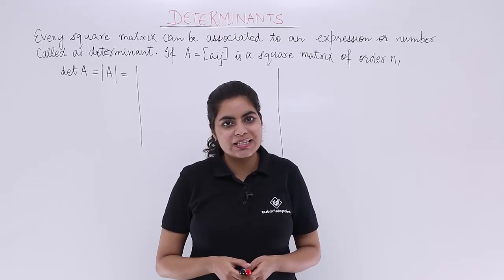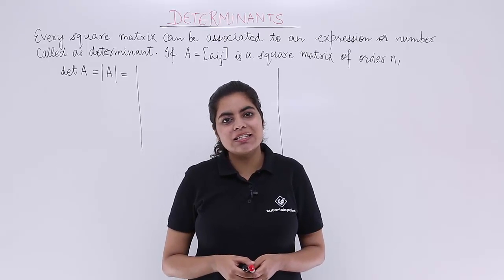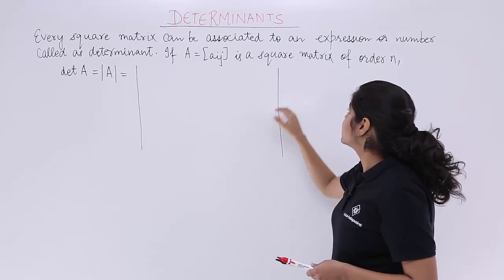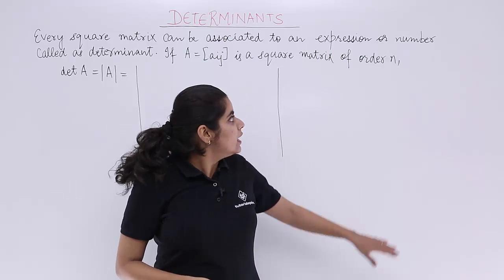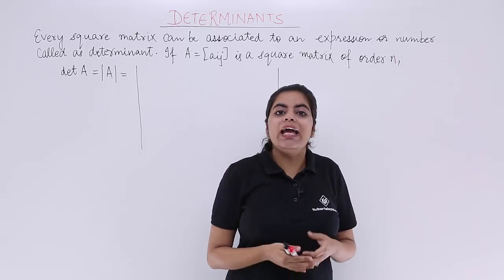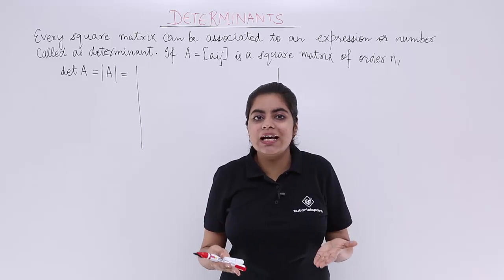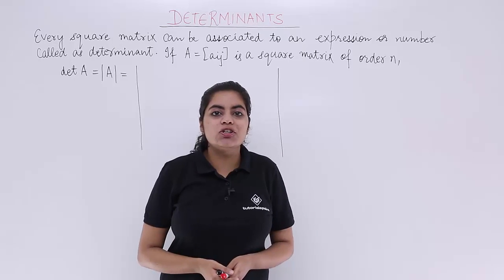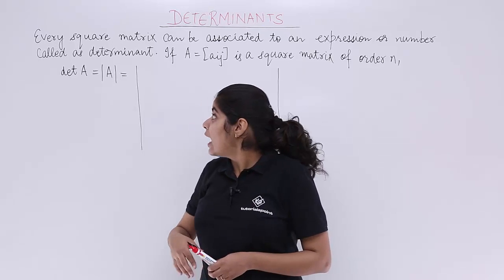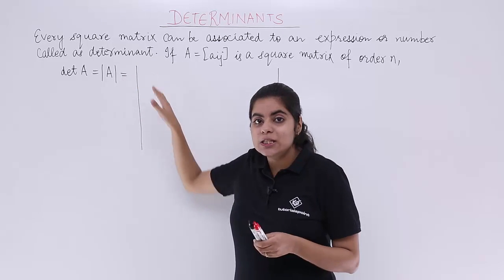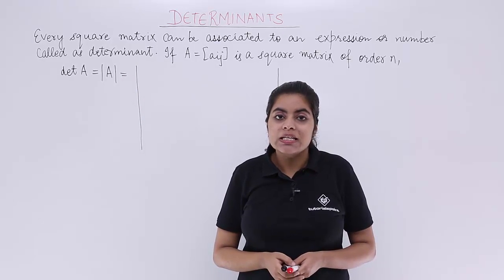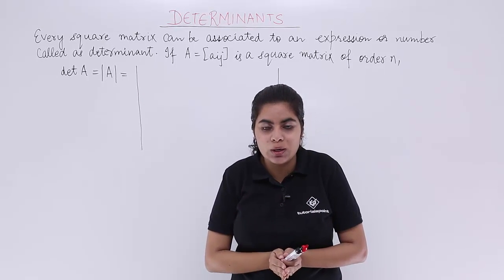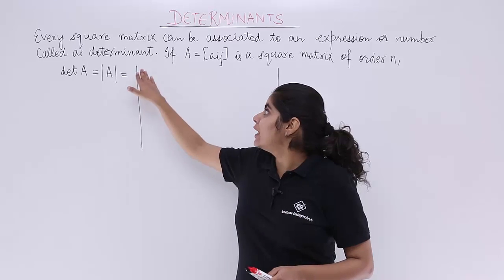We have written the definition. Let's see what it has to say. Every square matrix can be associated to an expression or a number. Any square matrix that you take will be associated to an expression or a number, and that number or expression is called as determinant. Since it is a fixed value, it determines the expression as a whole, so it is called as determinant.